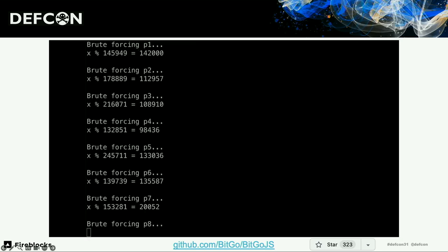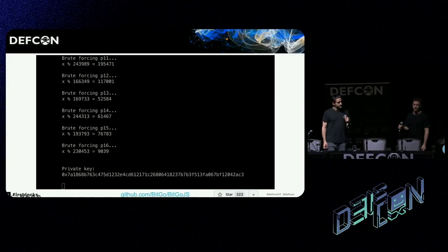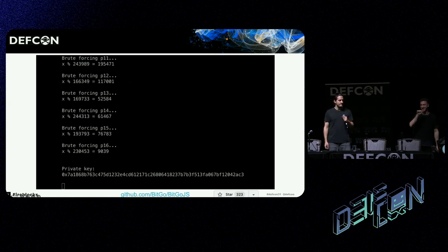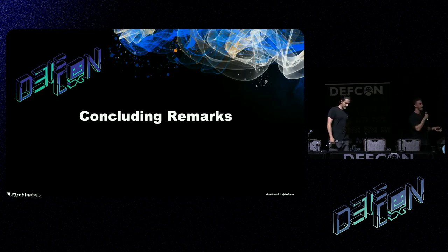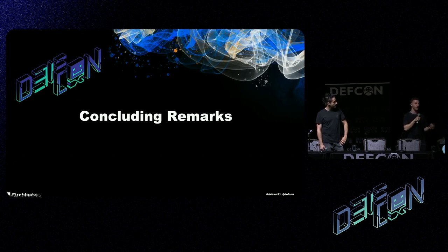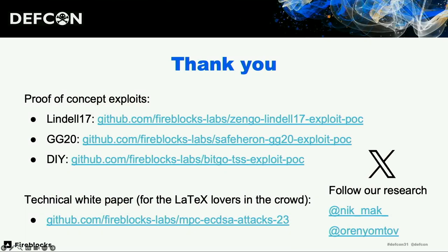This demo goes fast, so do not blink. We start signing, do the MTA phase, get the leakage, do the brute forcing, feed it all into CRT — and we have the private key. To conclude, we've shown a bunch of different attacks on MPC protocols that all result in exfiltrating the private key, bypassing the basic security promise of MPC protocols. This is a new space, the cryptography is really interesting, and it could really use as many researchers and smart people looking over it, making sure everyone's implementing this stuff correctly. Here you can find all the proof-of-concept source codes we showed today, as well as a technical white paper explaining the math in more depth. Thank you very much for coming.